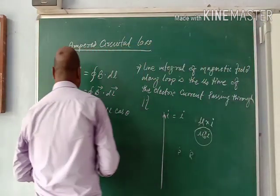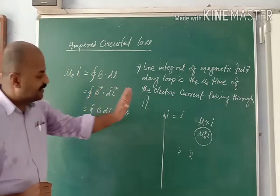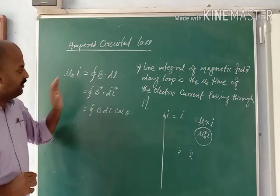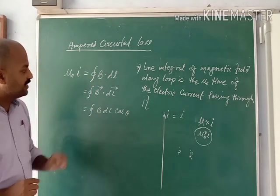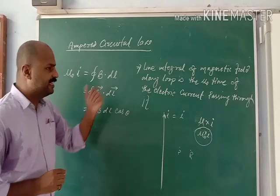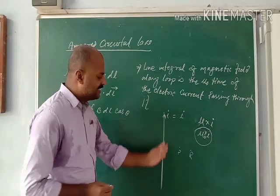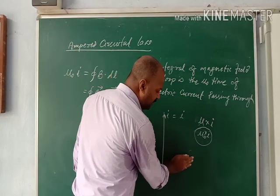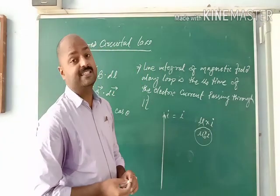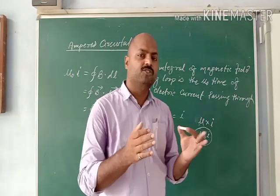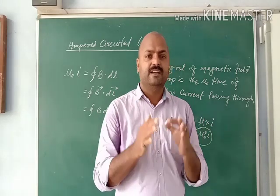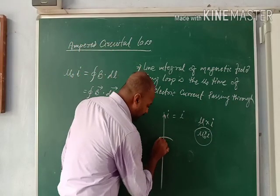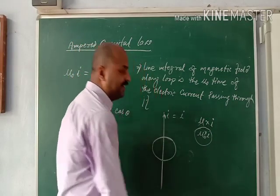Now, the amount of magnetic field produced by the current-carrying conductor I is equal to μ₀I, and μ₀I is equal to the closed integral of B·dl. We get this closed integral of B·dl because, just as in the first chapter we imagined a Gaussian surface to measure flux, here we imagine an Amperian loop.